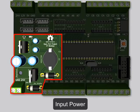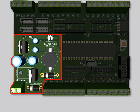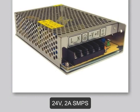We will now take a look at the input power section of the board. The board must be powered using a 24V DC power supply. The 24V and 12V connections are capable of handling up to 2A of current. The onboard 24V input power terminals are marked GND (ground) and 24V. We are using a 24V 2A SMPS for power supply.